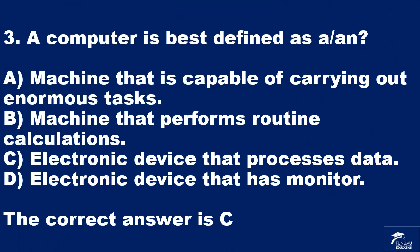Question 3. A computer is best defined as: A: a machine that is capable of carrying out enormous tasks. B: a machine that performs routine calculations. C: an electronic device that processes data. D: an electronic device that has a monitor. The correct answer is C.